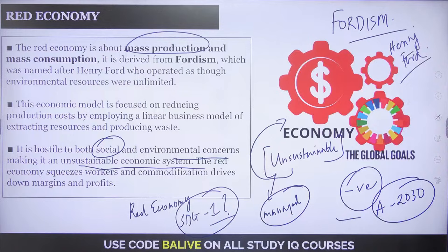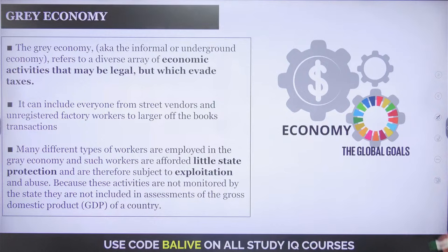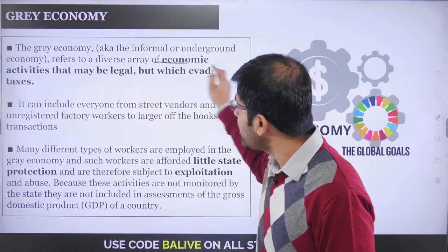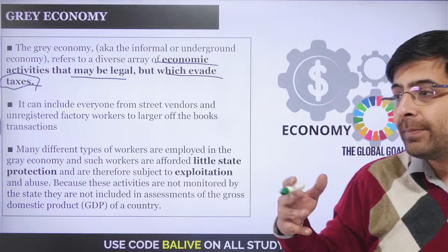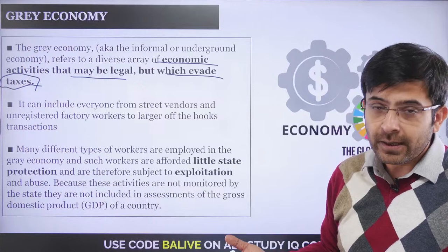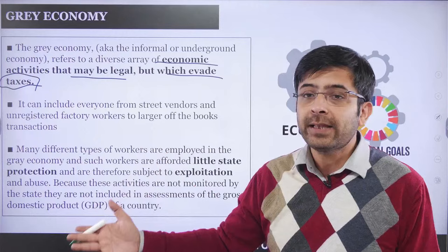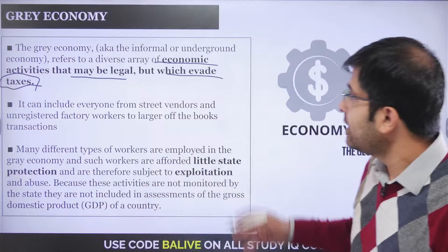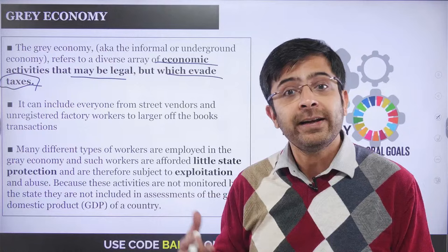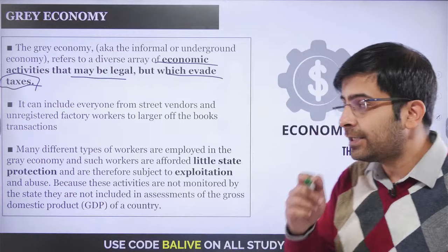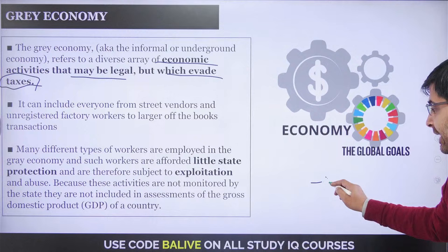Gray economy refers to economic activities that may be legal but which evade taxes — the gray zone. Examples include local roadside shops and street vendors that are not part of the commercial tax bracket, unregistered factory workers, and offshore transactions used to evade taxes. These activities have potential to be brought into the organized sector. However, in its current form, gray economy is still negative to the application of Agenda 2030, as workers lack rights and are prone to exploitation.